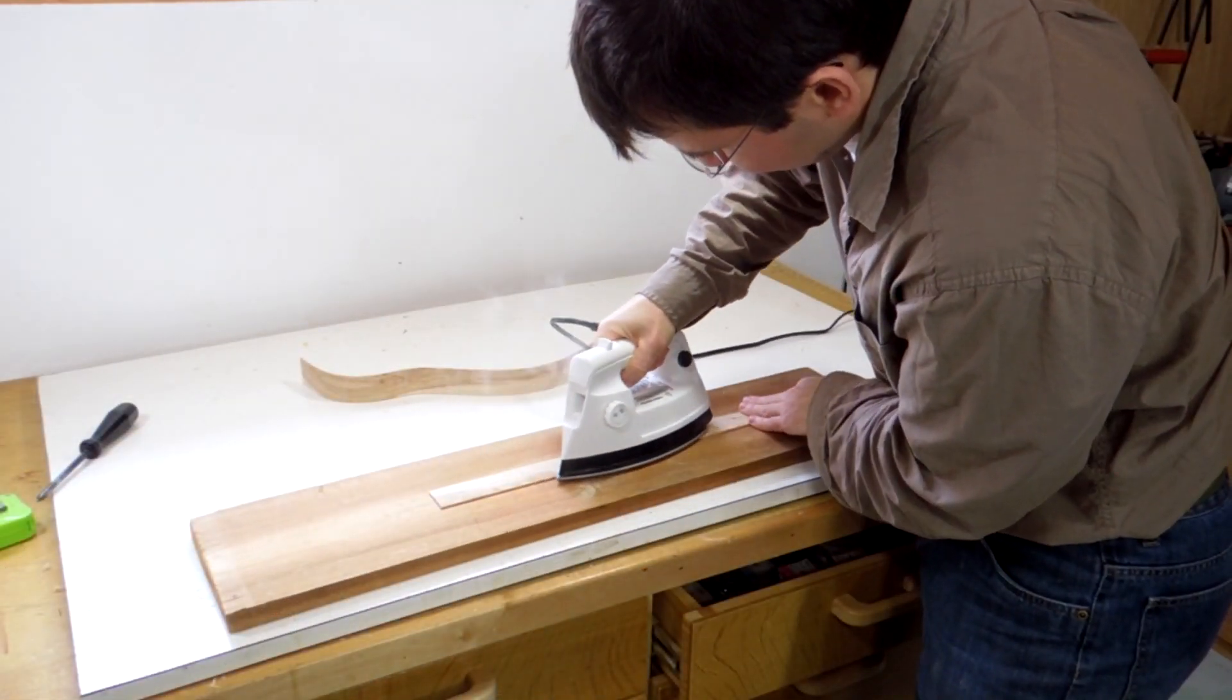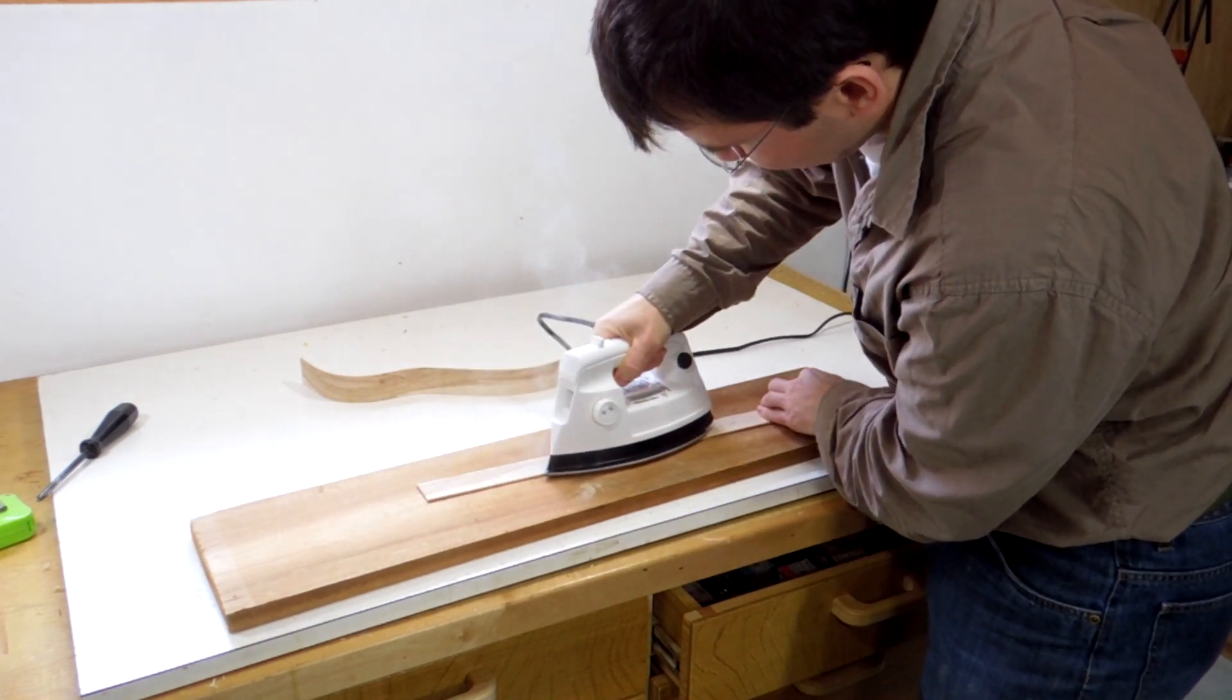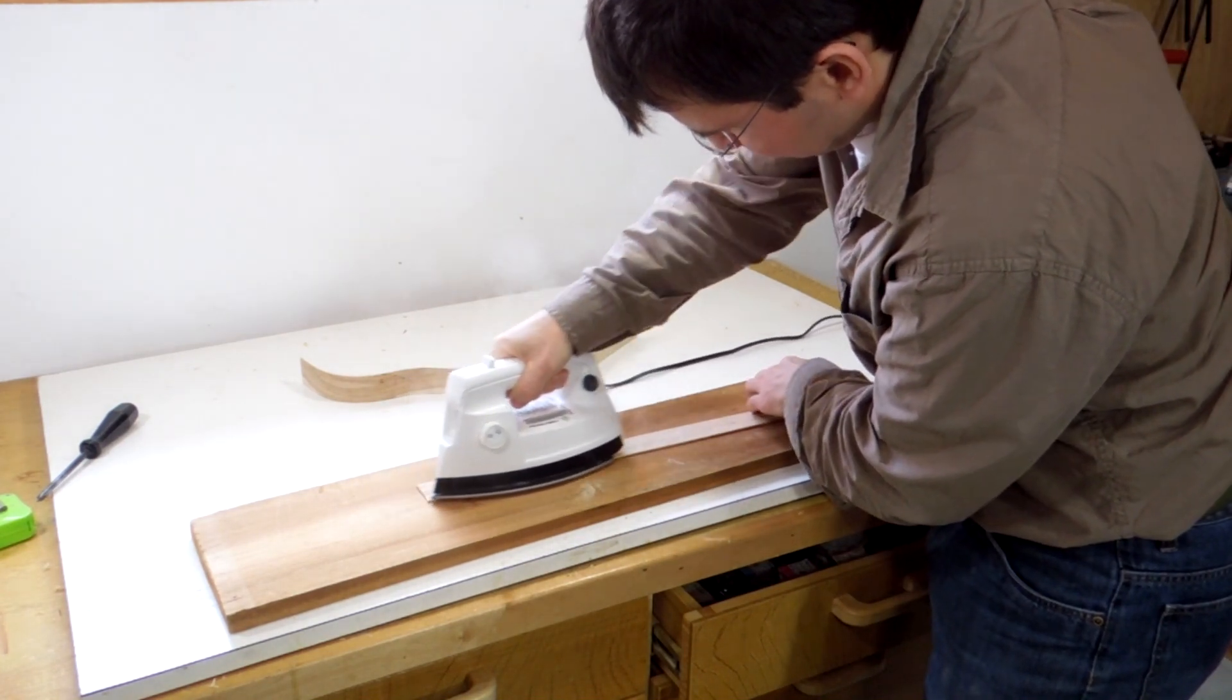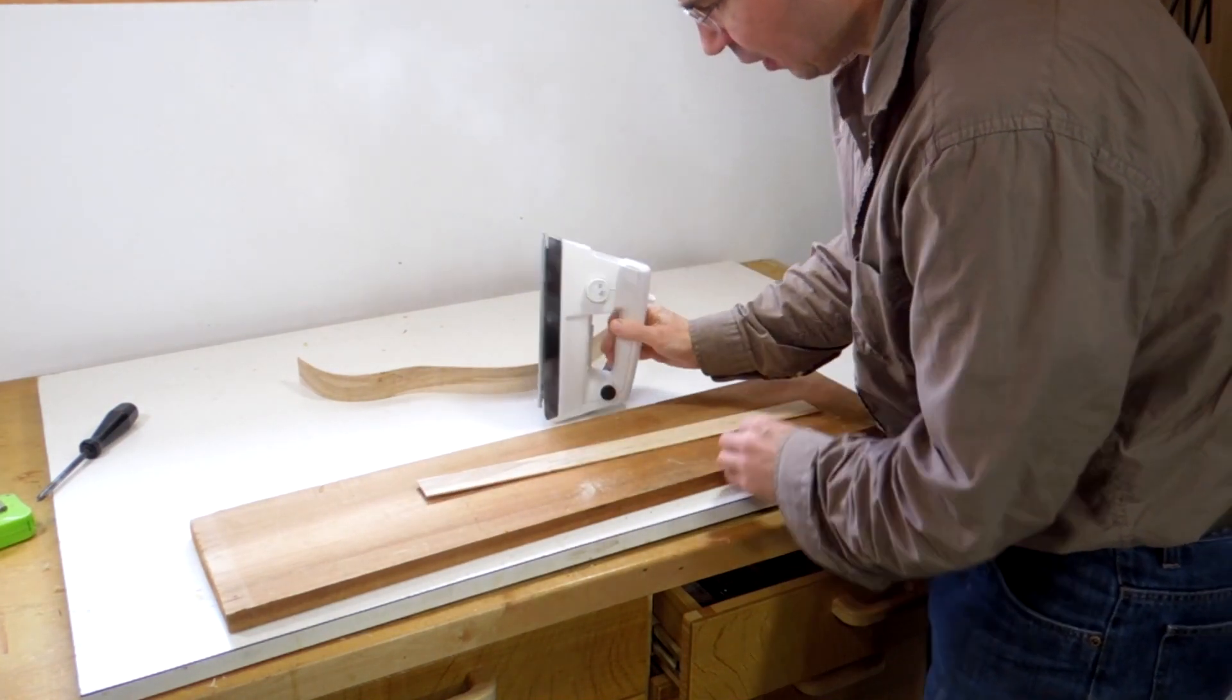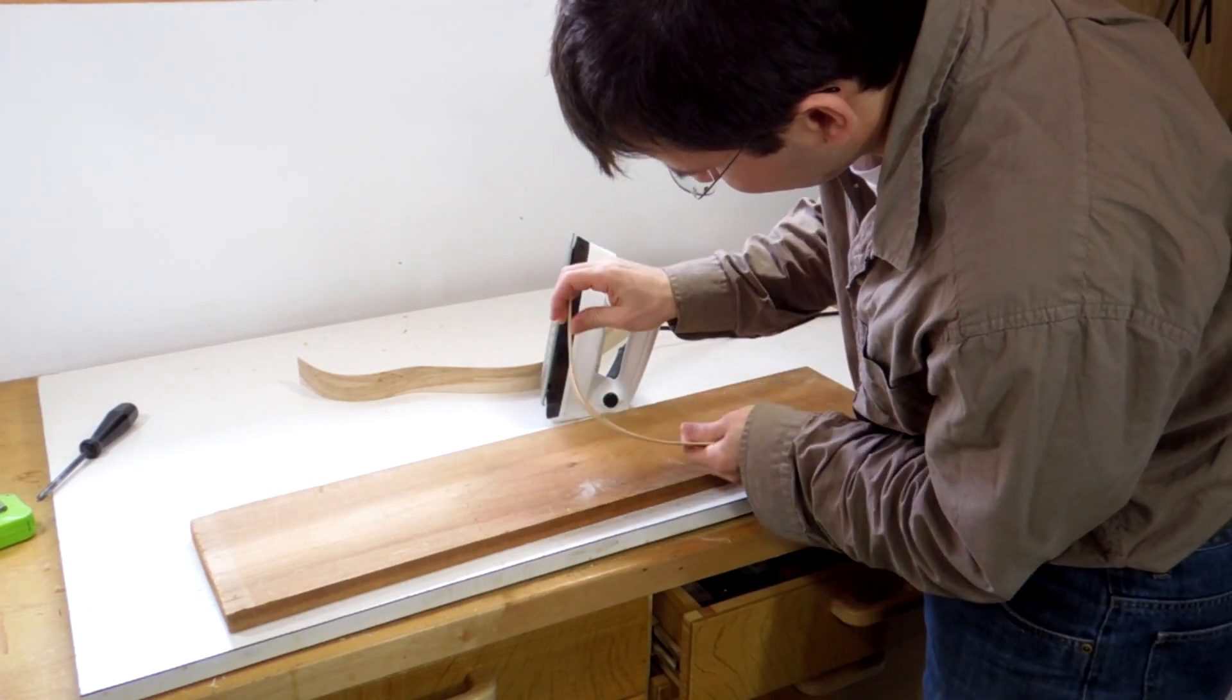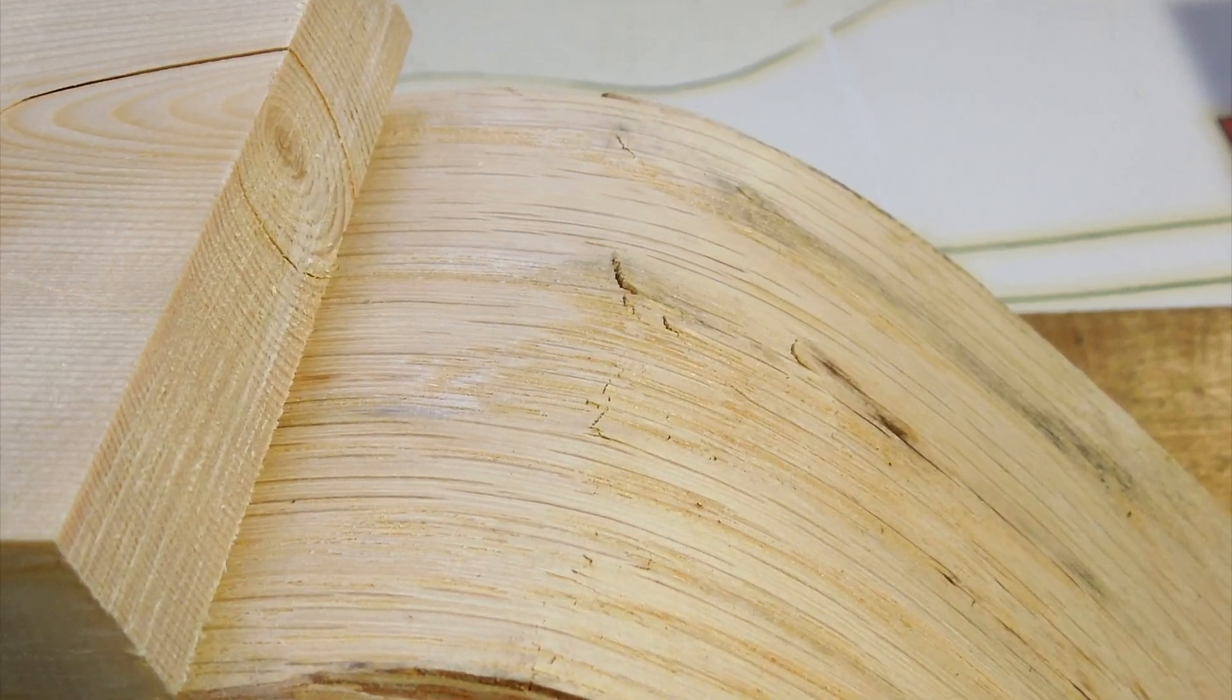Next I need to bend the sides for the ukulele. To bend wood it helps to apply moisture and heat. I figured a steam iron would be ideal for that. But when I tried to bend it around the tight radiuses of the form that I had, I actually got some cracking in some places. I wasn't getting enough heat or steam or something.